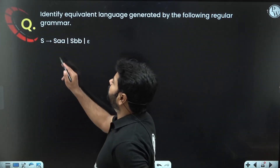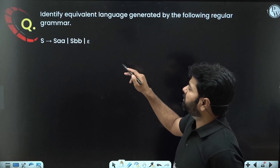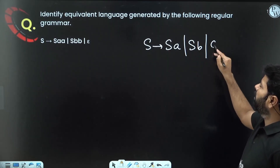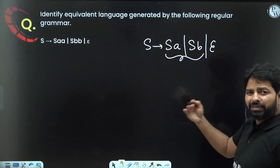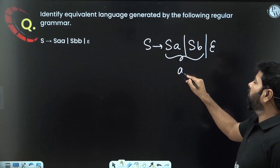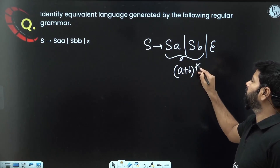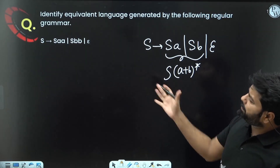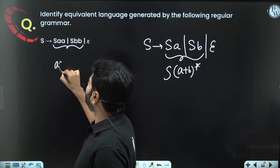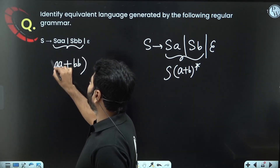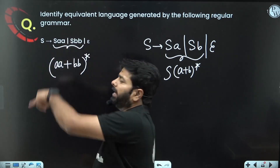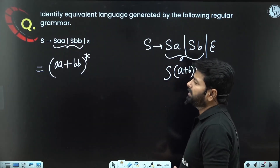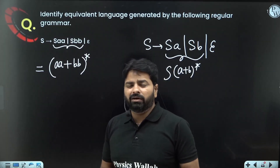In the third example: S → S a | S b | ε. This generates (a∪b)* — any sequence of a's and b's with epsilon possible. In the fourth example: S → S a a | S b b | ε. This generates (aa∪bb)*, repeating 'aa' or 'bb' in any order, giving the language (aa∪bb)*.